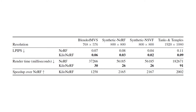We extensively evaluate KiloNERV by experimenting on two synthetic and two real datasets. As you can see in this table, KiloNERV achieves higher LPIPS scores than NERV on all datasets, despite being 1-2 thousand times faster.